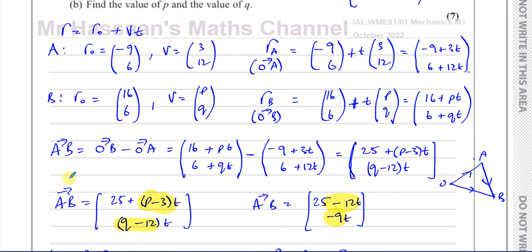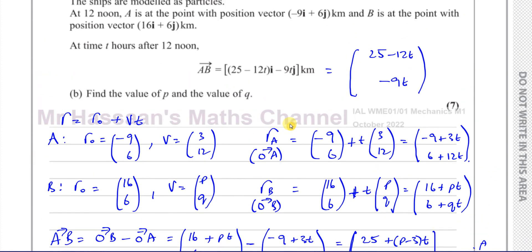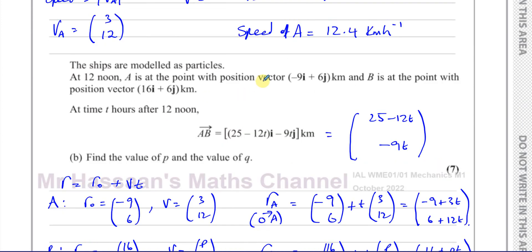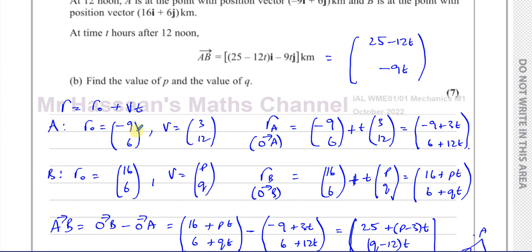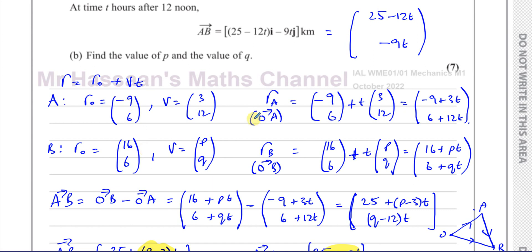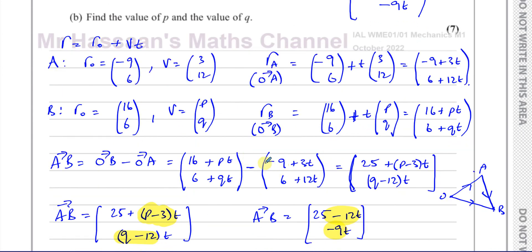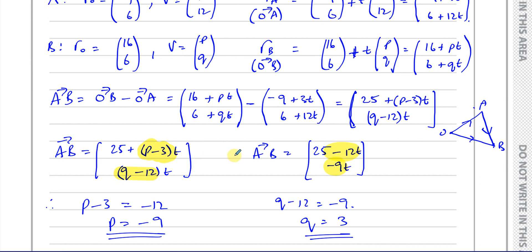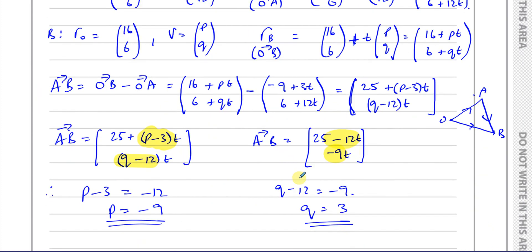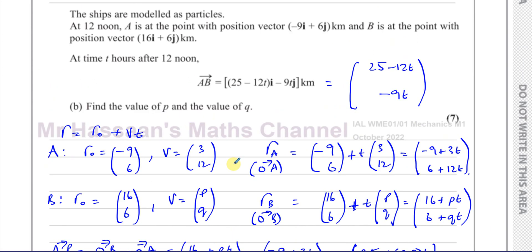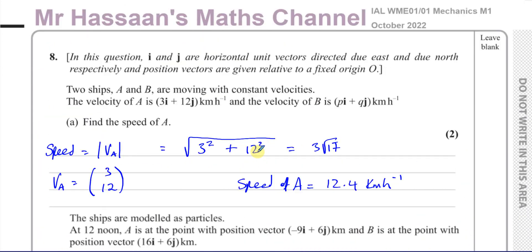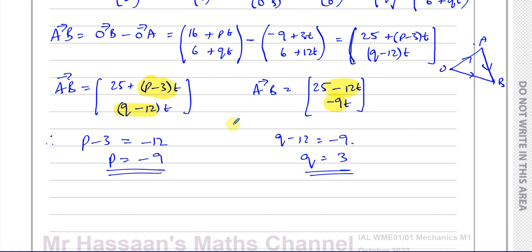That's the answer to this question — you had to find the vector A to B in terms of P and Q using the position and velocity vectors, then equate it to the given vector for A to B and compare components. They must be the same, so P − 3 equals −12 and Q − 12 equals −9. That concludes part B — seven marks.